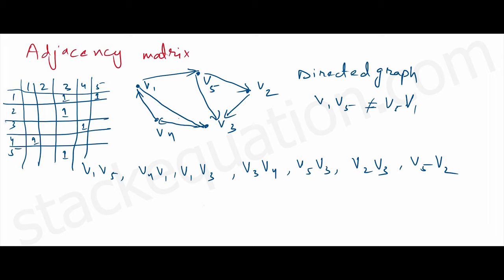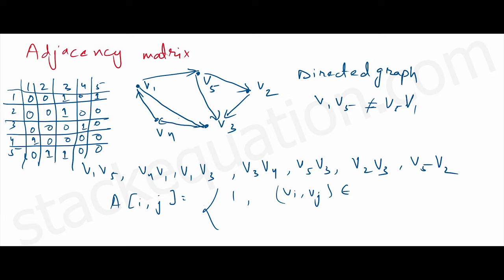Lastly, for V5→V2 we mark 1, and the remaining cells are marked 0. We can represent this formally as: A[i][j] = 1 if edge (Vi, Vj) belongs to the edge set, or 0 if it does not. This is the adjacency matrix equation for a directed graph.